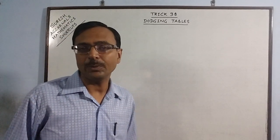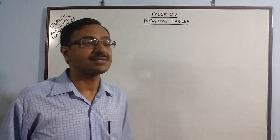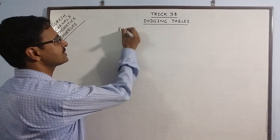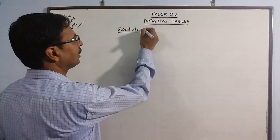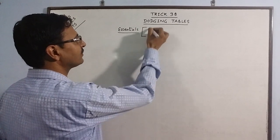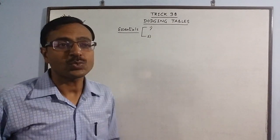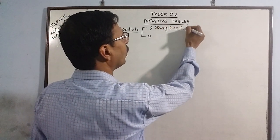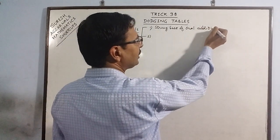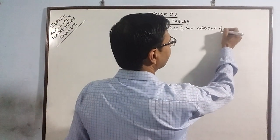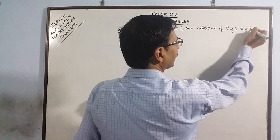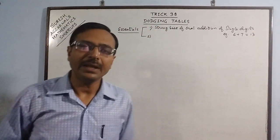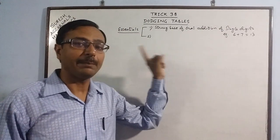There are some essentials which have to be taken care of before the child starts these dodging tables in class 3 onwards. The very first one is to build a strong base of oral addition of single digits like 6 plus 7 equals 13. If the child is comfortable in adding single digits, this forms the basis of all dodging tables.